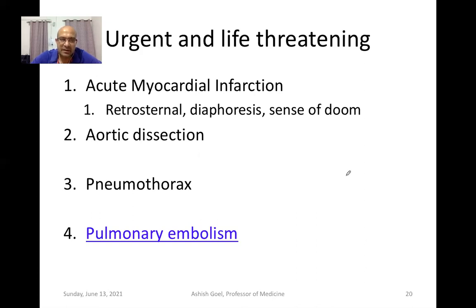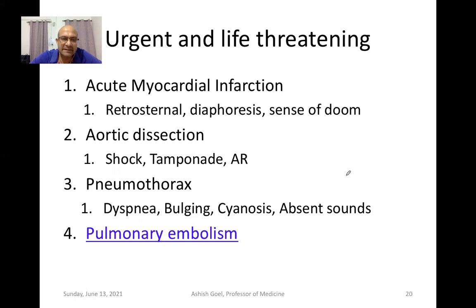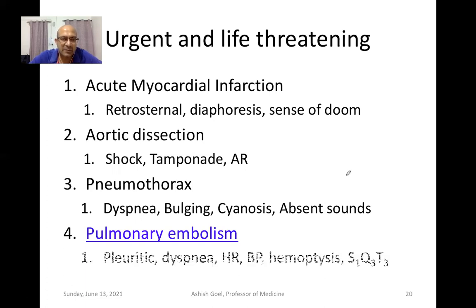In aortic dissection, the patient would present with shock, there may be tamponade, and an aortic regurgitation murmur may be found. In pneumothorax, the patient will have rapidly increasing dyspnea, bulging of the chest, cyanosis, and absent breath sounds on examination. In pulmonary embolism, the pain would be pleuritic in nature, the patient would have dyspnea and breathlessness.